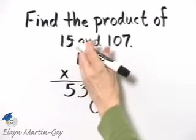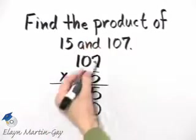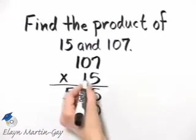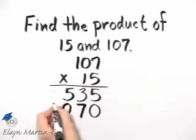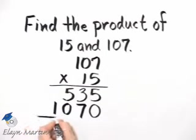So let's remove this carry 3. And now 1 times 7 is 7. 1 times 0 is 0. And 1 times 1 is 1. And now what do we do?